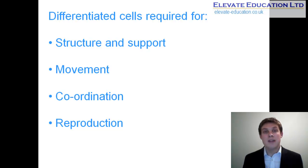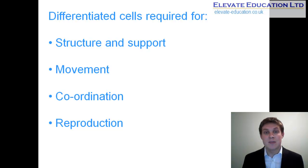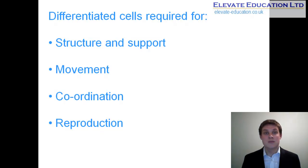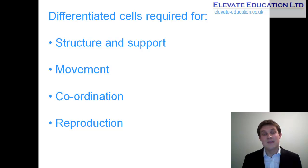As organisms become made of more and more cells, it becomes difficult for them to reproduce in the same way as single-celled organisms — they cannot simply split by binary fission into two cells, as they are too large and too complex. So they need specialized cells both to carry the genetic material and to deliver it outside of the organism.